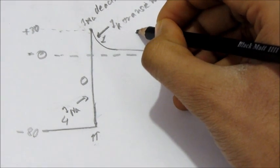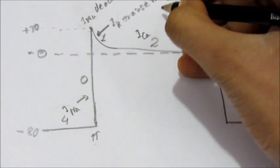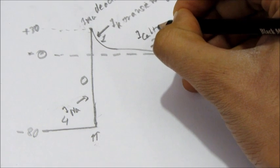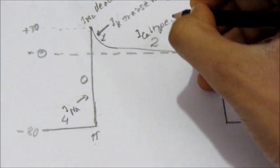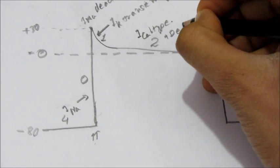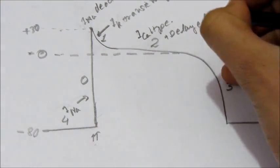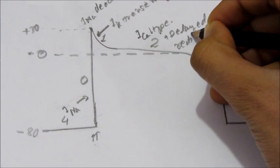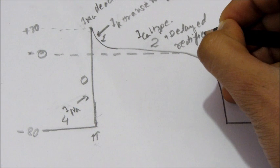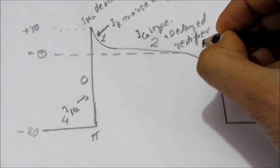So here, sodium channel, calcium channel is open of L type, plus delayed rectifier potassium channel, potassium channel is open.